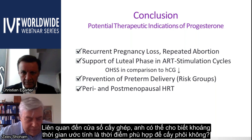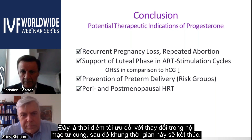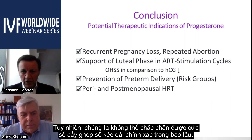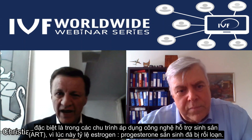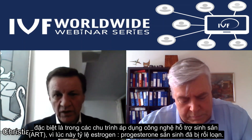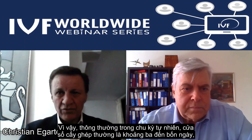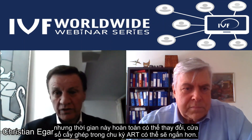The implantation window is usually around three to four days, representing the optimum of endometrial changes, after which it closes again. However, in ART cycles it is never entirely clear how long it lasts, because the disturbed ratio between estrogen production and the addition of progesterone may impact the endometrial receptive phase — so it may be longer or sometimes shorter in ART cycles.